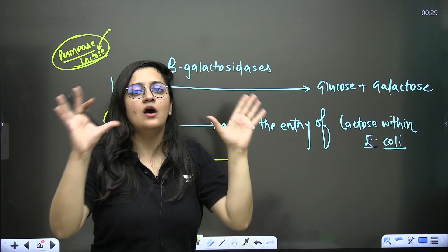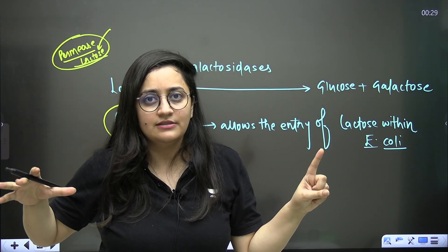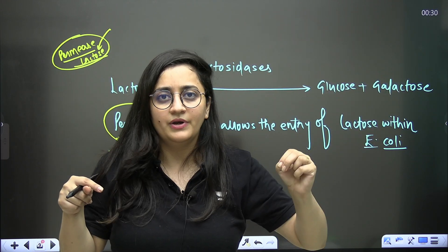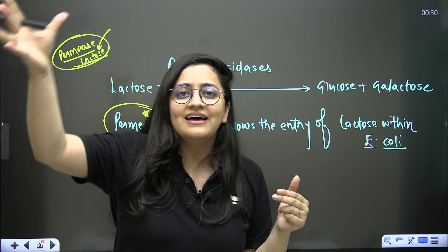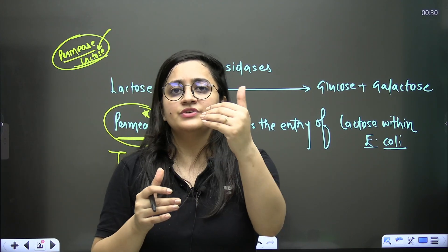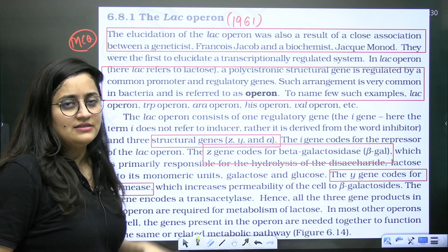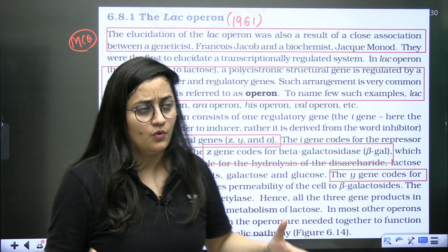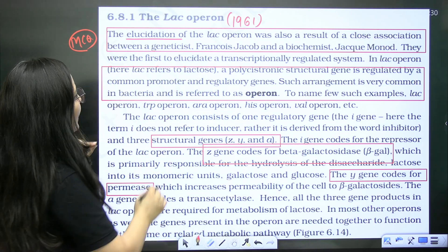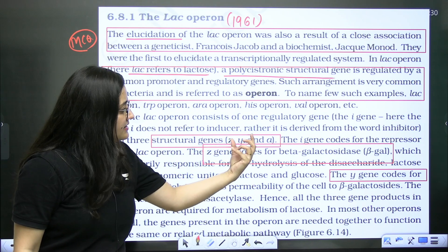Summary of the lac operon: it is the negative control of the inducible operon. It is inducible because genes are switched on. It is negative control because the regulatory gene forms a repressor. The repressor binds to the operator, blocking RNA polymerase from binding the promoter. When the inducer (lactose/allolactose) is present, it inactivates the repressor, allowing transcription and translation to proceed.